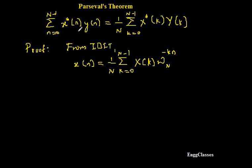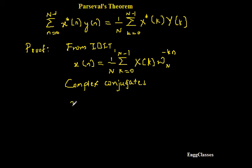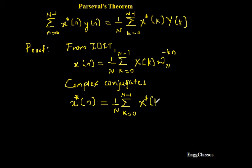To prove the theorem, I need summation of x*(n) y(n), but in the IDFT expression I only have x(n), not x*(n). x*(n) is the complex conjugate of x(n). So I have to take complex conjugates on both sides. Taking complex conjugates on both sides: x(n) becomes x*(n), x(k) becomes x*(k), and W_N to the power of minus kn becomes W_N to the power of plus kn.